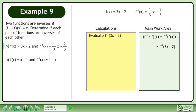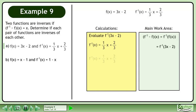Before we can continue, we need to evaluate f inverse at 3x minus 2. We know that f inverse of x equals 1 over 3 times x plus 2 over 3. So f inverse of 3x minus 2 equals 1 over 3 times (3x minus 2) plus 2 over 3.